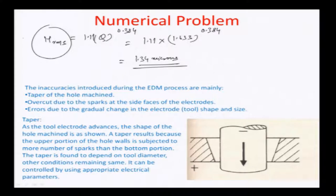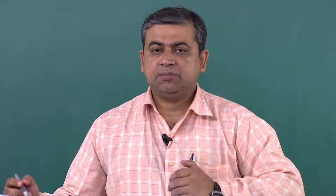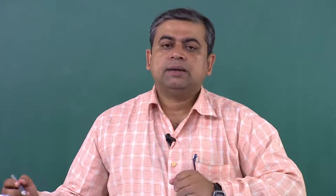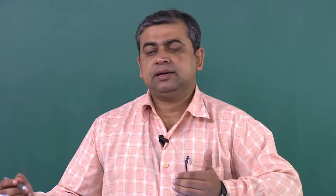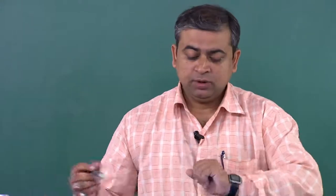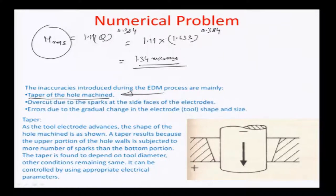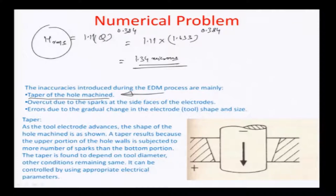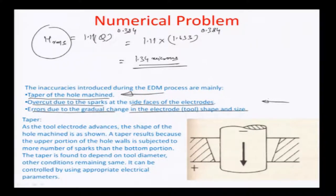There are inaccuracies in the EDM process. The main problems arise from differences in the time that various portions of the wall of a machined hole are exposed to sparks. The three principal categories of inaccuracy in EDM are: (1) taper of the machined hole, (2) over cuts due to sparks at the side faces of the electrode, and (3) errors due to gradual change in the electrode tool shape and size.